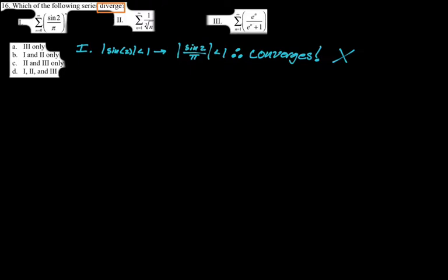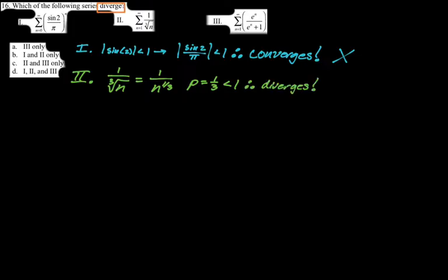Number two is a p-series. I rewrite radicals: one over the cube root of n is one over n to the one third, so p equals one third. One third is less than one, so this diverges. That's part of our answer.